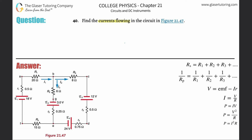We're going to need two loop equations and then one junction equation. Don't get too caught up in which loop to choose — you said three loops but we only need two, so just choose any two. Don't worry about the current directions either — they're already outlined in the problem, so just follow those.